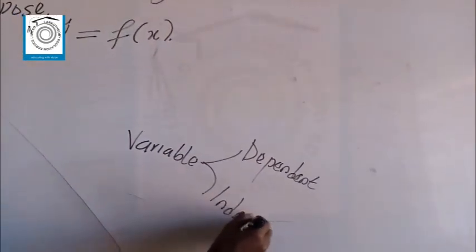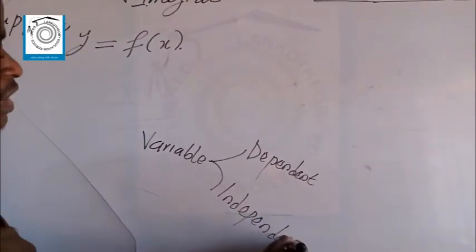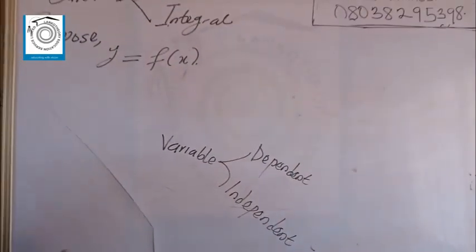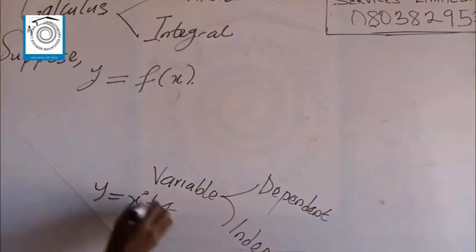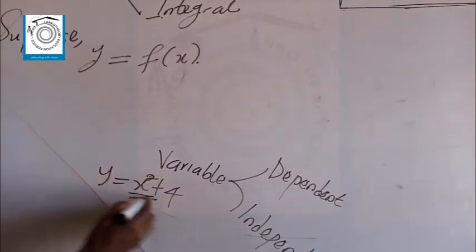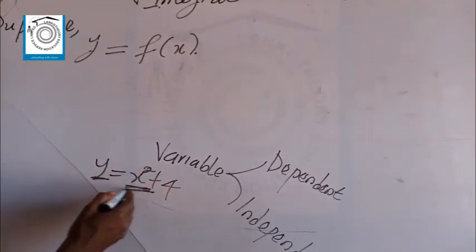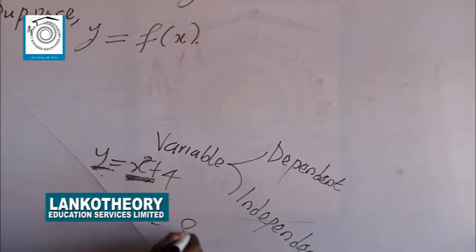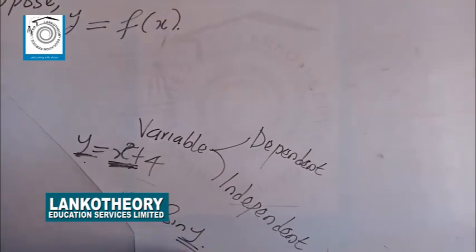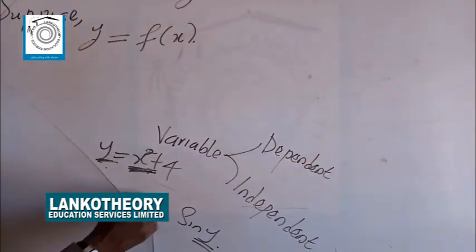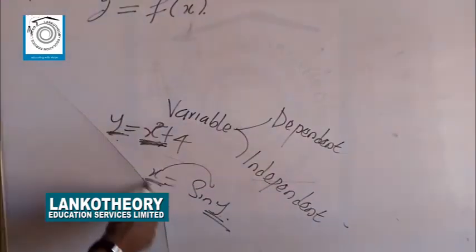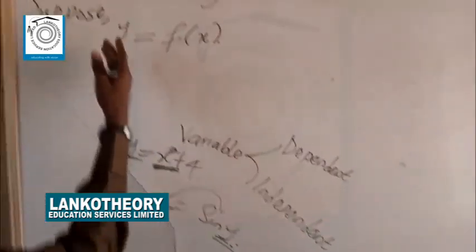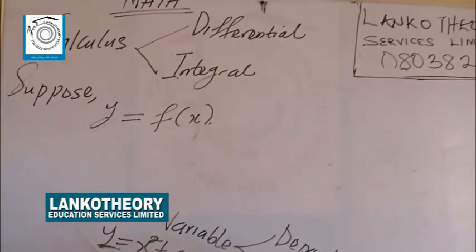Dependent and independent variable. If you say dependent variable, this is the variable that takes on a value. The independent variable is the variable that you assign a value to. In the sense that we have Y equal to X squared plus 4 — so if you know the value of X, you can actually get the value of Y. If I say X is equal to sine Y, you observe that if you know the value of Y, then you can easily get the value of X. So X is defined in terms of Y. But mostly in calculus here, Y is only served as dependent and X is only served as independent variable.